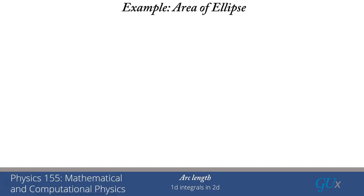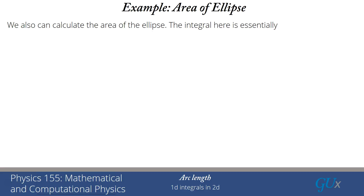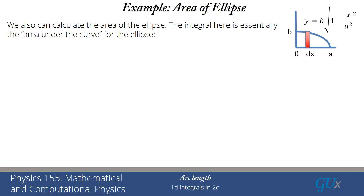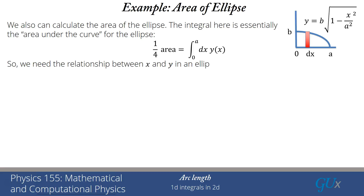We can also calculate areas. To get the area of the ellipse, we figure out the formula: the integral is essentially the area under the curve. Working in the upper quadrant, it'll be one-fourth of the total area. I think about putting little rectangles of width dx and height y, so the area of each rectangle is y of x times dx. I simply sum that over all x values. So one-fourth of the area equals the integral from 0 to a of dx times y of x. We already solved for y of x because we understand the relationship between x and y in an ellipse.